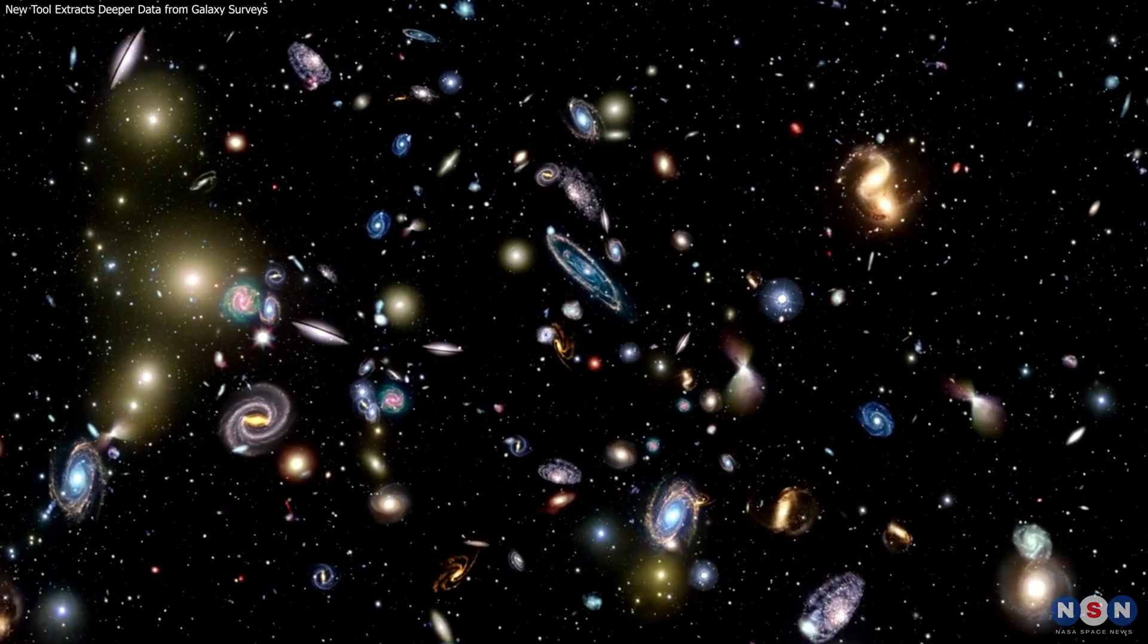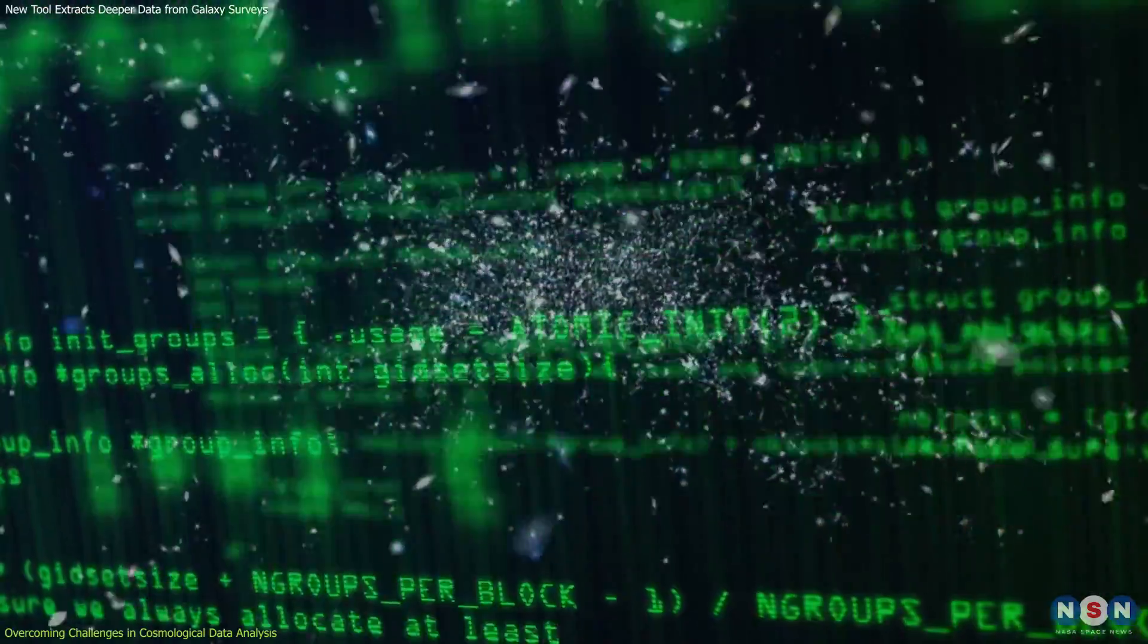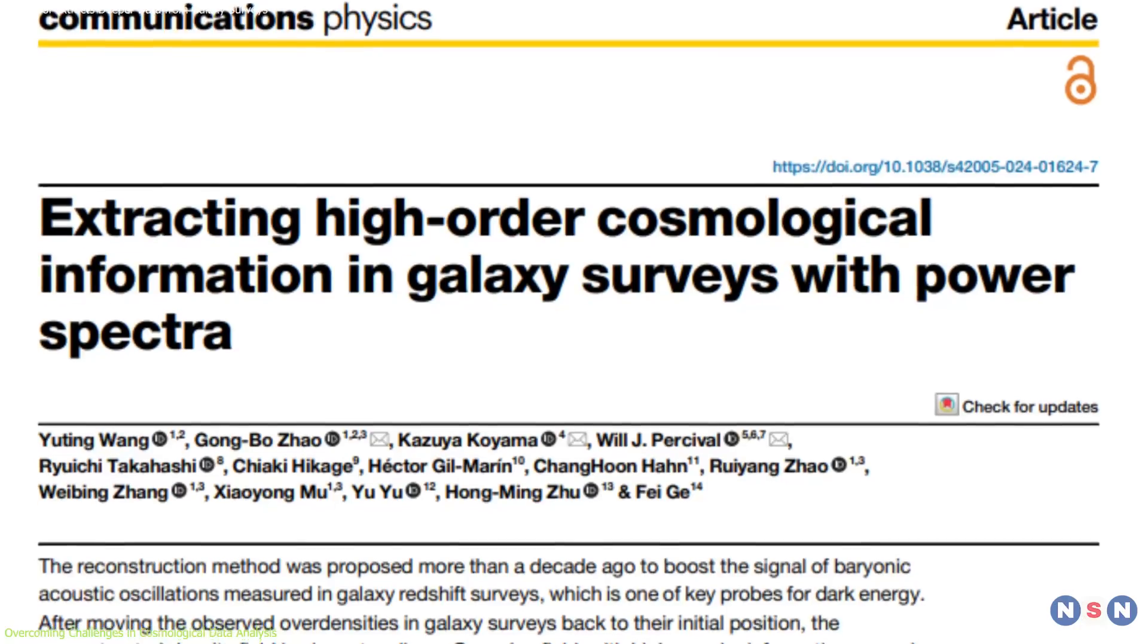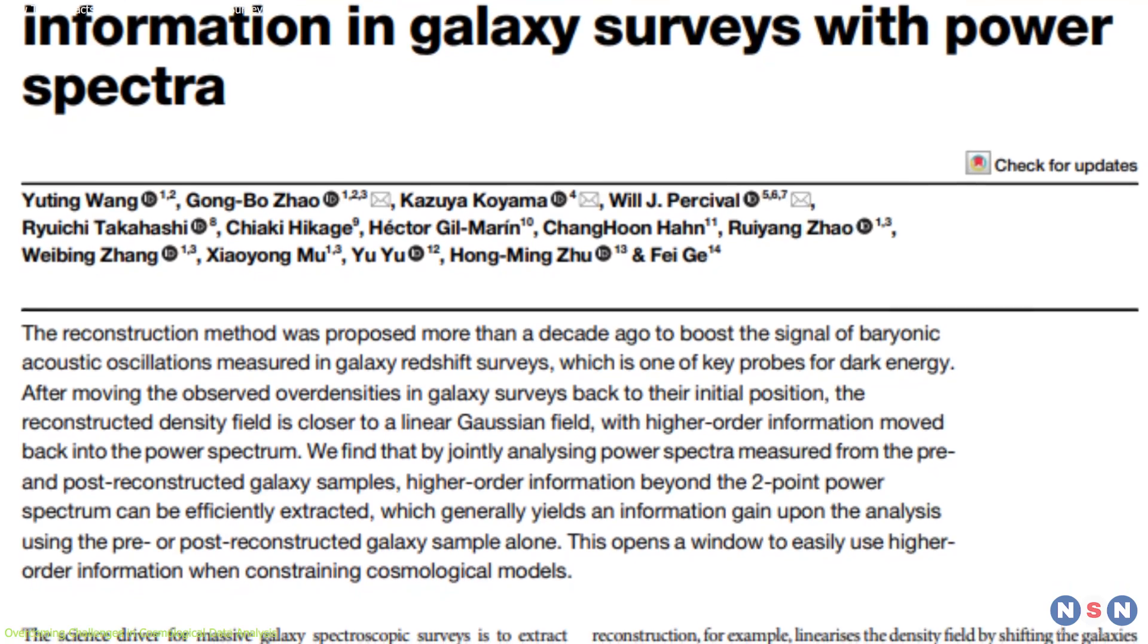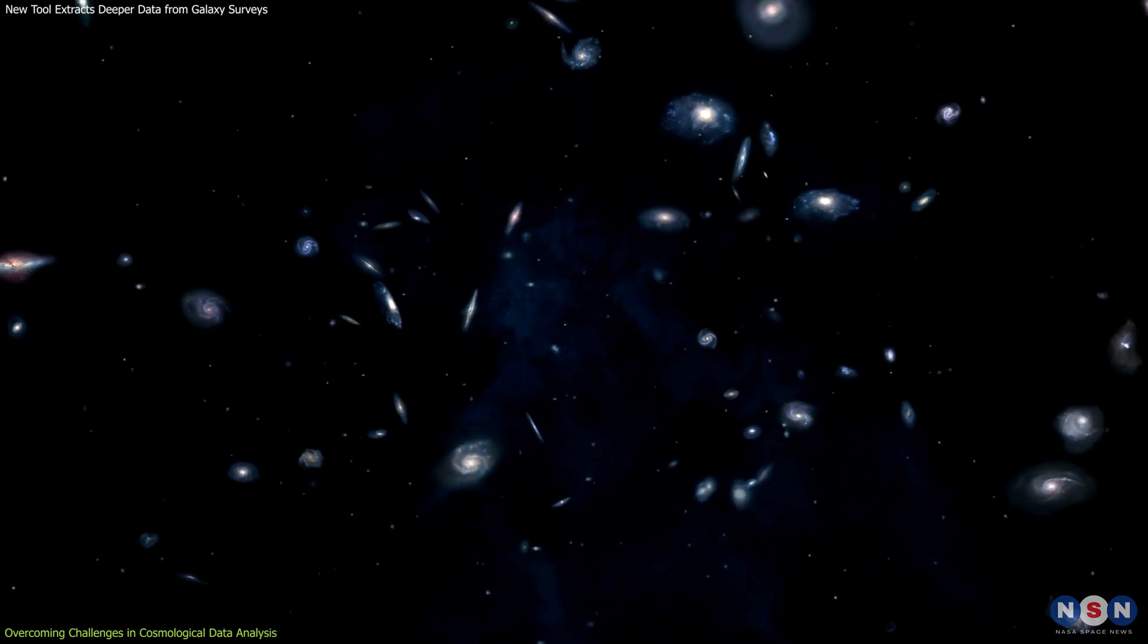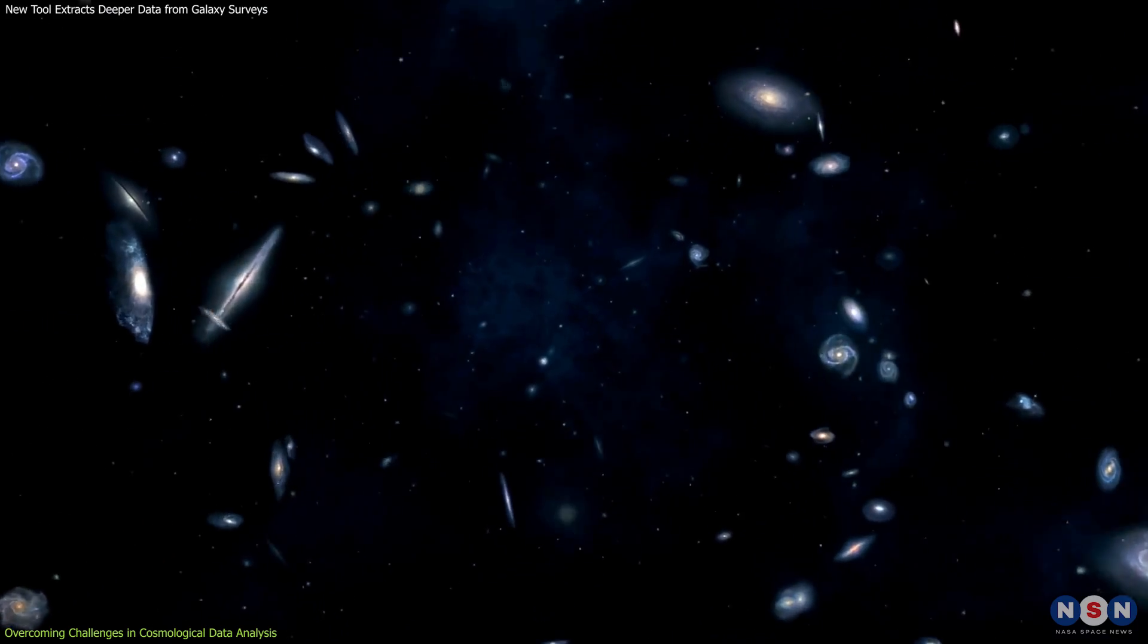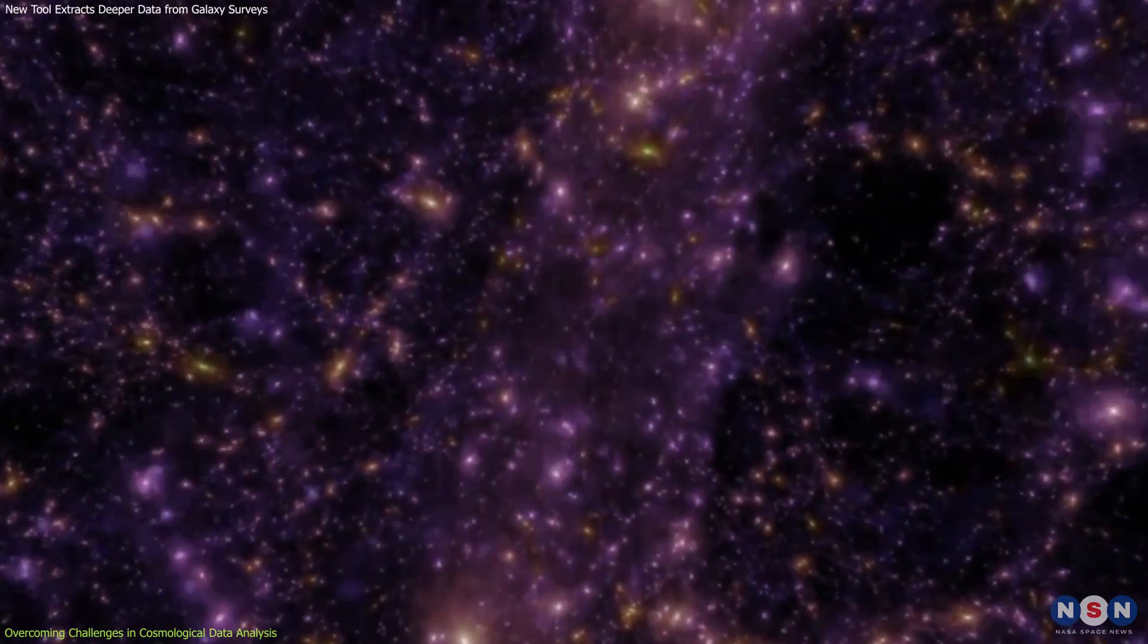Analyzing higher-order correlations in galaxy surveys presents significant computational challenges due to the complexity and volume of data. The novel method developed by researchers simplifies this process through density reconstruction, which sharpens the focus on essential features within the galaxy distributions and reduces computational load.